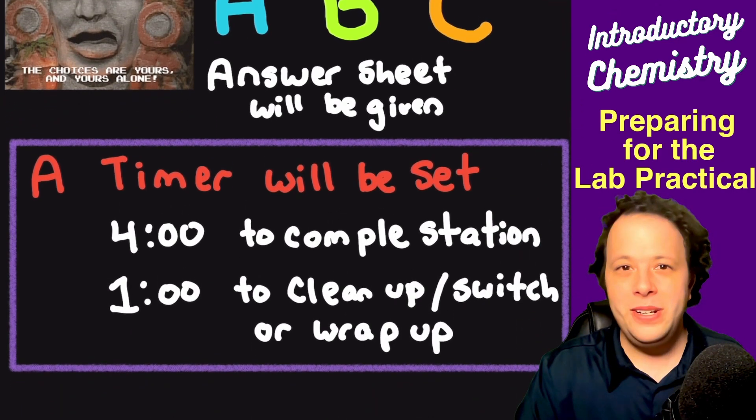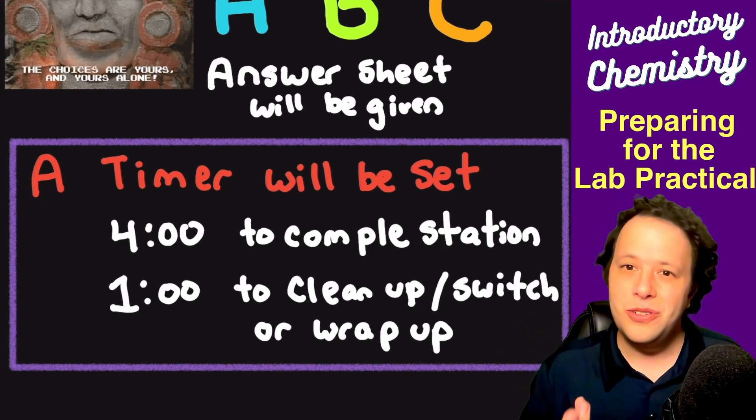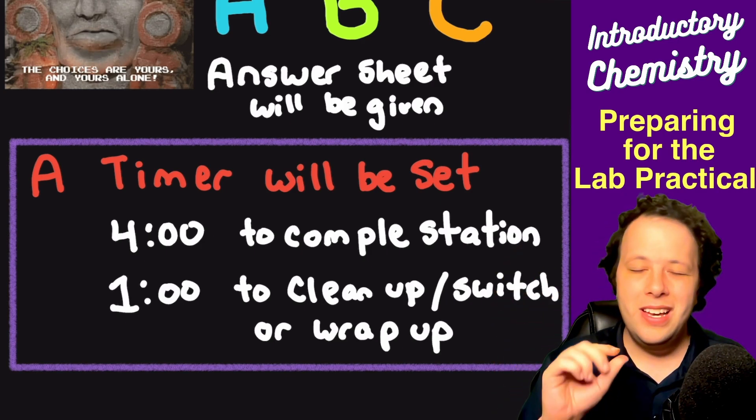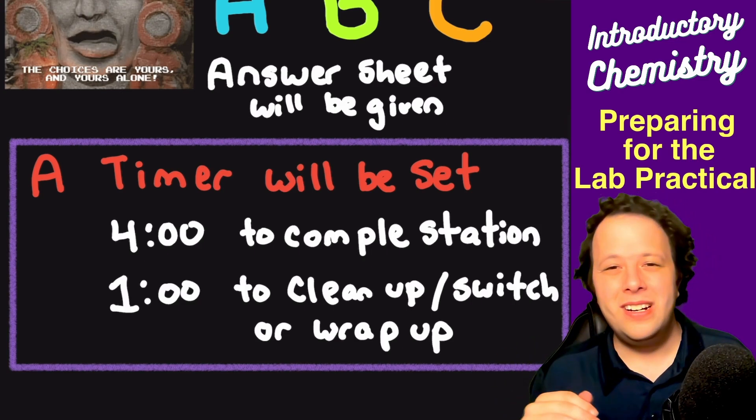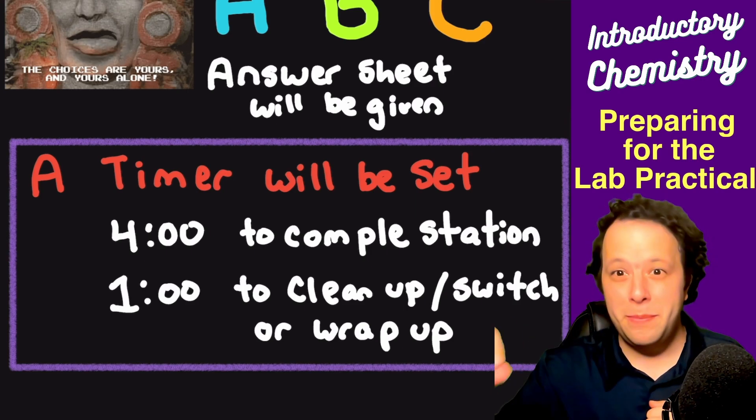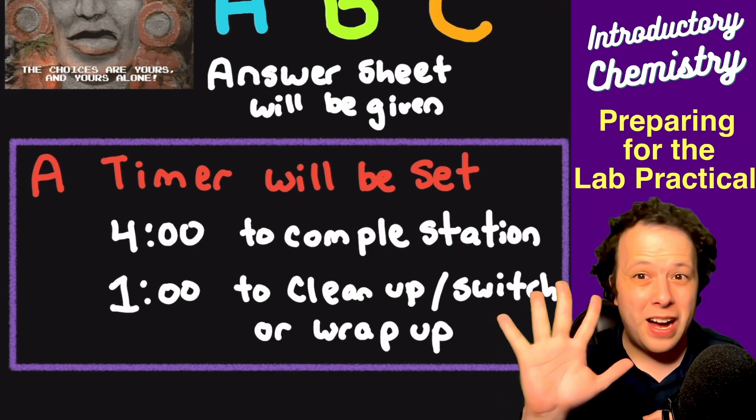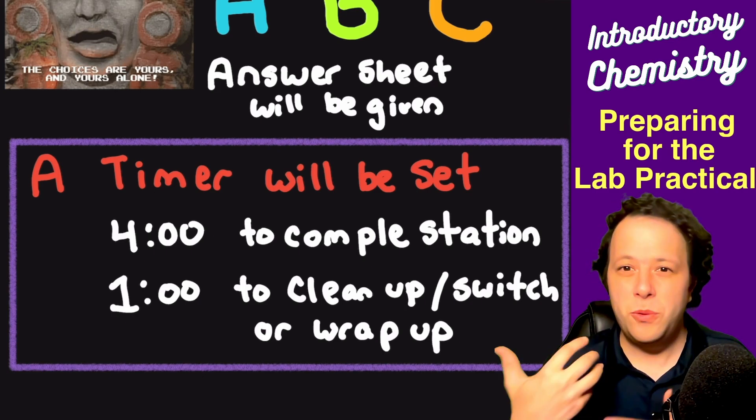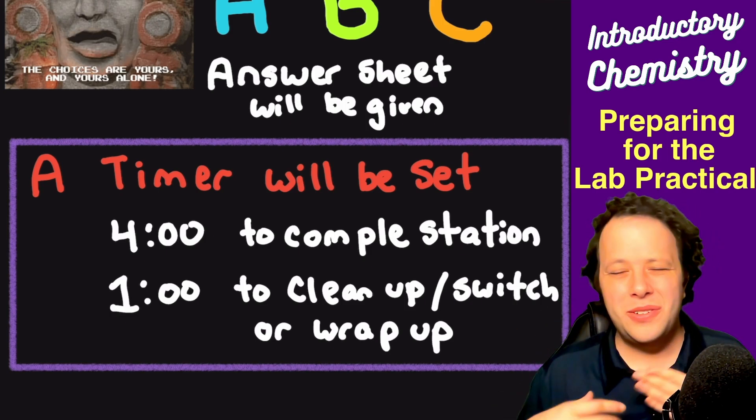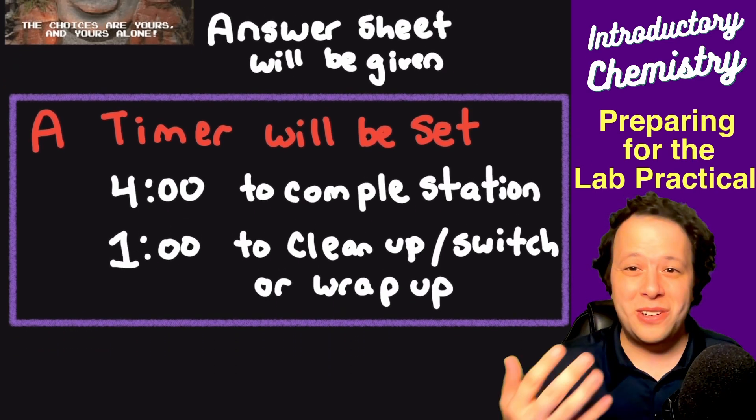When everybody's in place, there will be a timer set at the front of the room, usually shown on the projector screen. You're always given four minutes to complete the station and then one minute afterwards to clean up, switch stations, and wrap up. Overall, you have about five minutes to do whatever you need to do. It has to be something doable in that first four minutes, so don't try to study all these crazy things that take you hours to do.